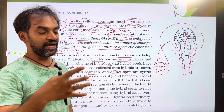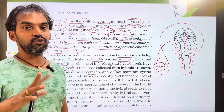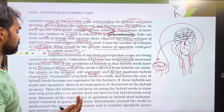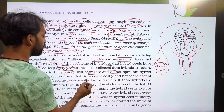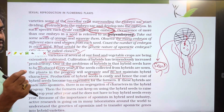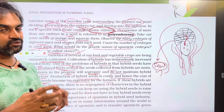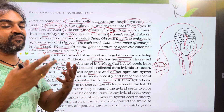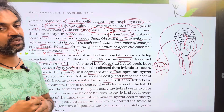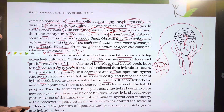So, genes segregate and hybrid characters are lost in subsequent generations due to cross-pollination. Therefore, the production of hybrid seed is costly, and the cost of hybrid seeds becomes too expensive for the farmers. Every time, in the laboratory, we have to produce the hybrid seeds — it is expensive.